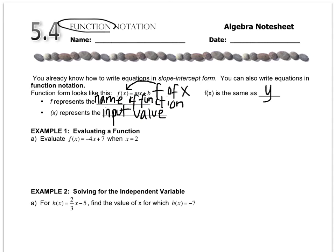So letter a, we would read that as evaluate f of x equals negative 4x plus 7 when x equals 2. This is the same as back when you did 6th grade, wherever you see an x, put a 2. So f of 2 equals negative 4 times 2 plus 7. Everywhere I saw an x, I put a 2. So that includes here and here.